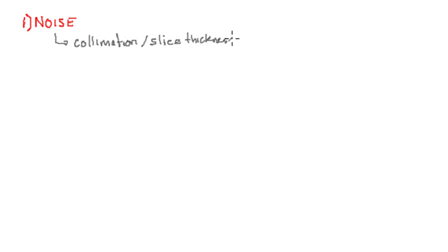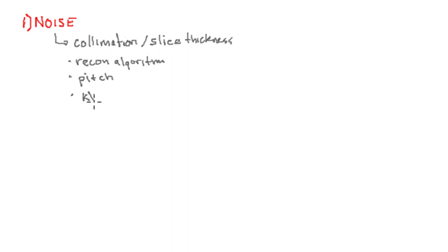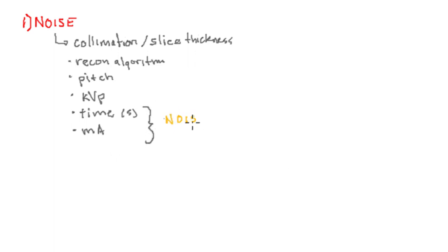Noise is controlled by several variables: the collimation or slice thickness, the reconstruction algorithm used for the CT, the pitch, the kVp you run the tube, the time in seconds, and the mA or current. The time and mA combine together — noise is proportional to one over the square root of mA times the time in seconds.